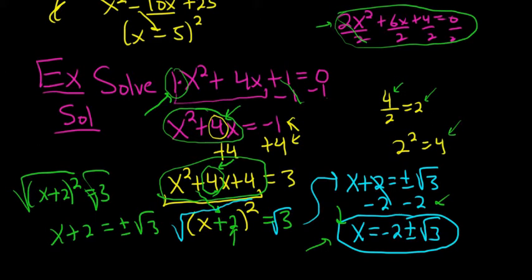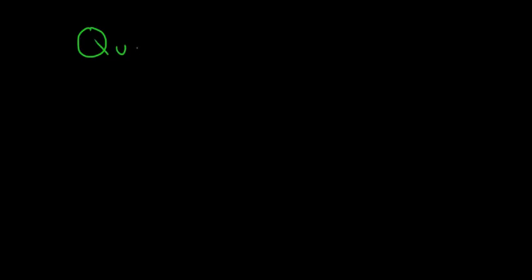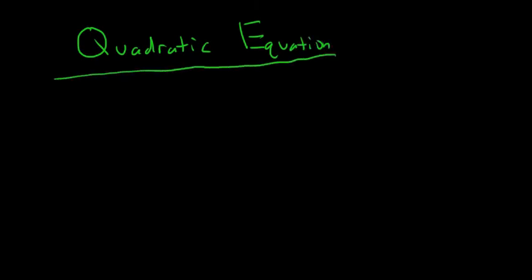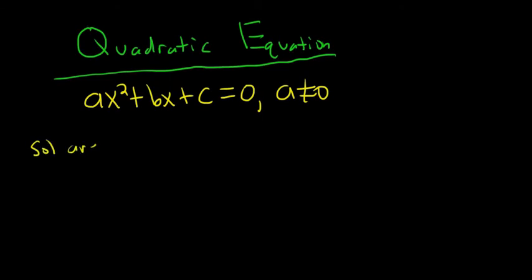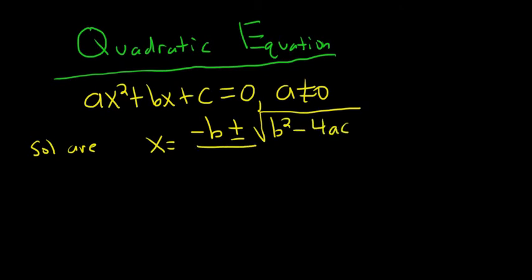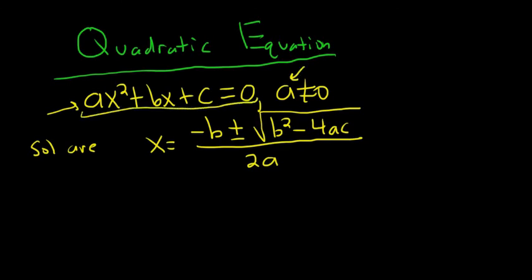Let's finish by covering the very last solution technique — the famous quadratic formula. If you have ax squared plus bx plus c equals 0, where a is not equal to 0, the solutions are x equals negative b plus or minus the square root of b squared minus 4ac, all over 2a. How do you come up with this? You divide everything by A and then complete the square, which is how you end up with the quadratic formula.